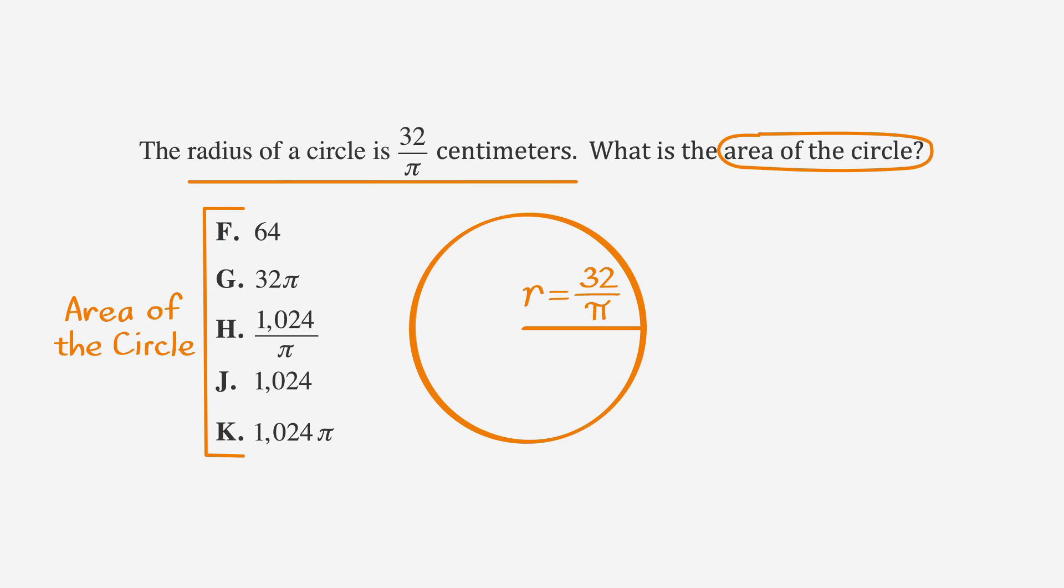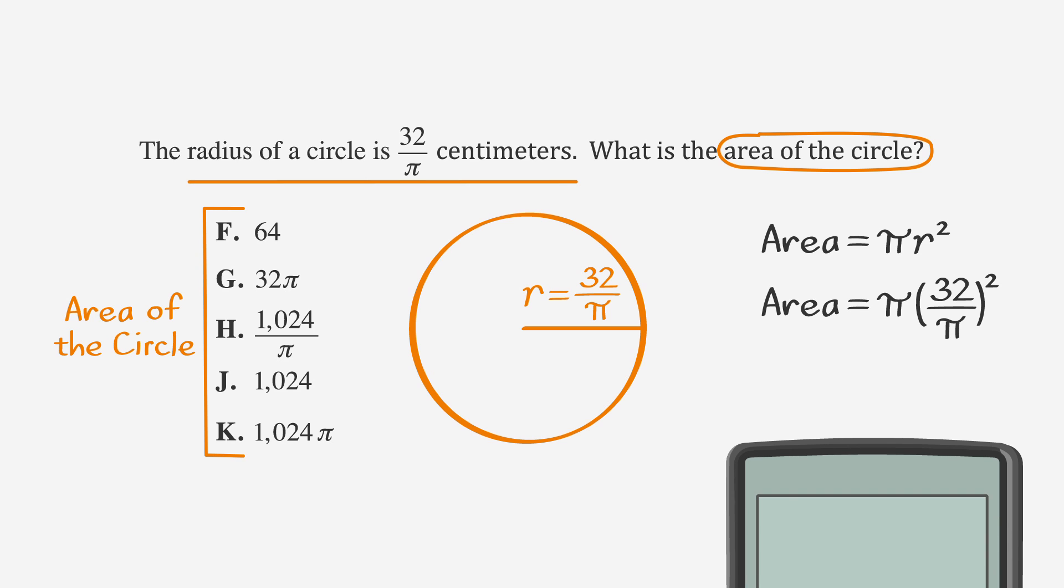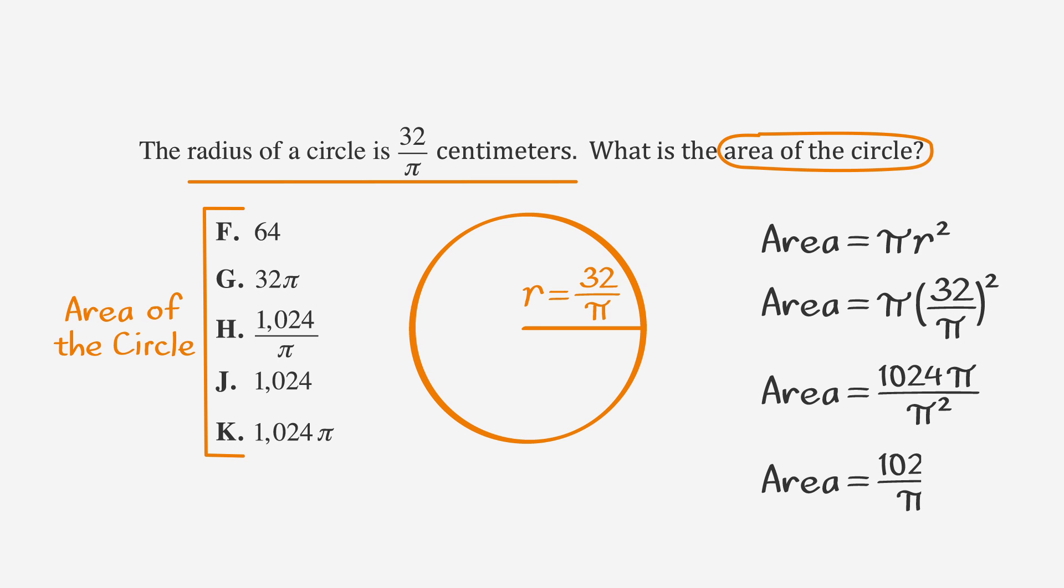This question is ready-made for the area equation. We know that the radius is equal to 32 over pi, so if we use the area equation, area equals pi times r squared, we can plug in pi times 32 over pi squared. If we use the calculator to square 32, we get 1024 times pi over pi squared. And if we simplify that, pi cancels out and we find that our area is equal to 1024 over pi, which is choice H.